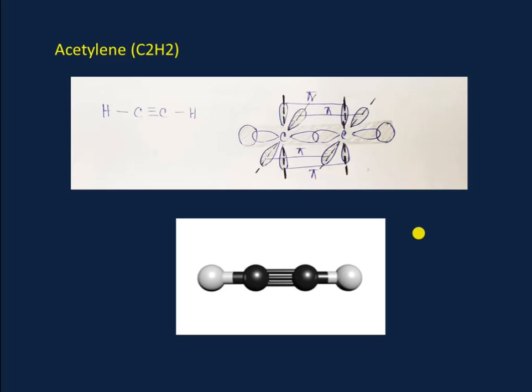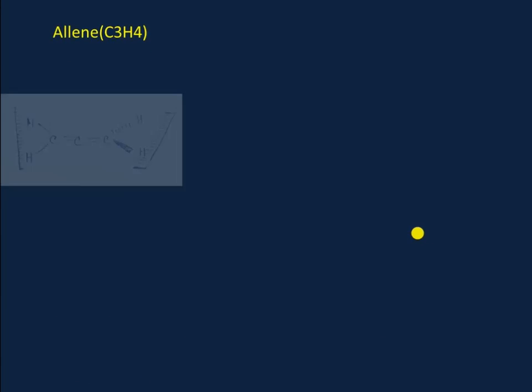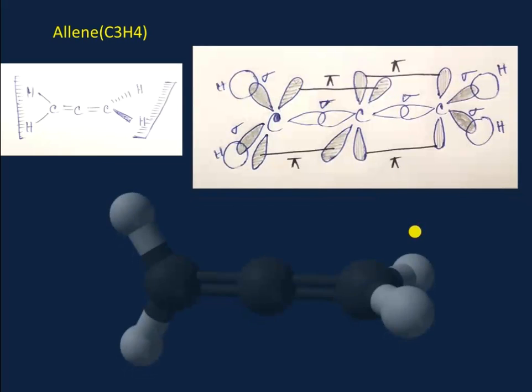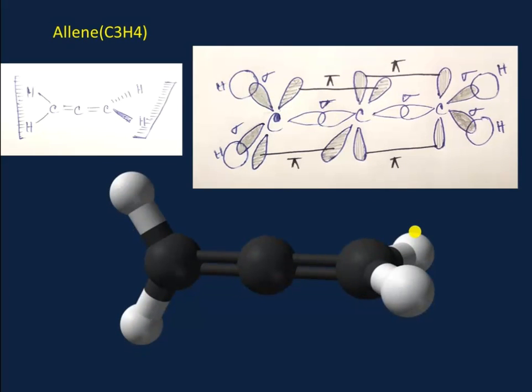Two unhybridized py and pz orbitals that lie mutually perpendicular to each other overlap side to side to form two pi bonds. Thus we get two pi bonds and one sigma bond in acetylene. Here is the 3D expression of acetylene, which may be quite difficult to understand, but the 3D expression should help you a lot.